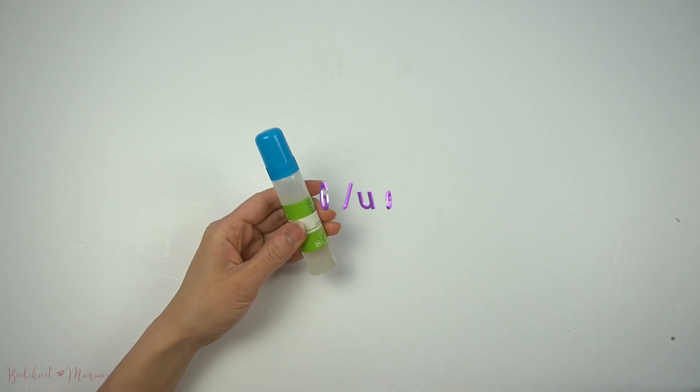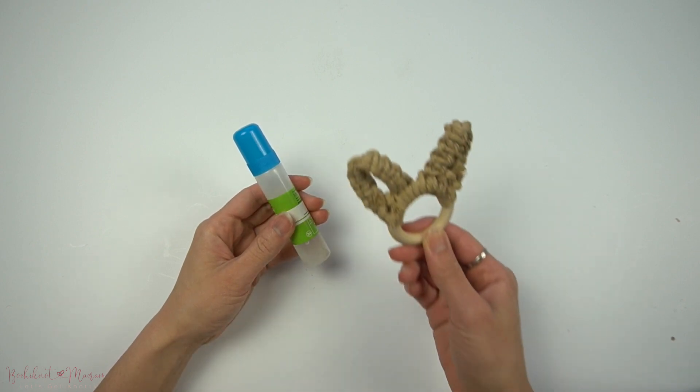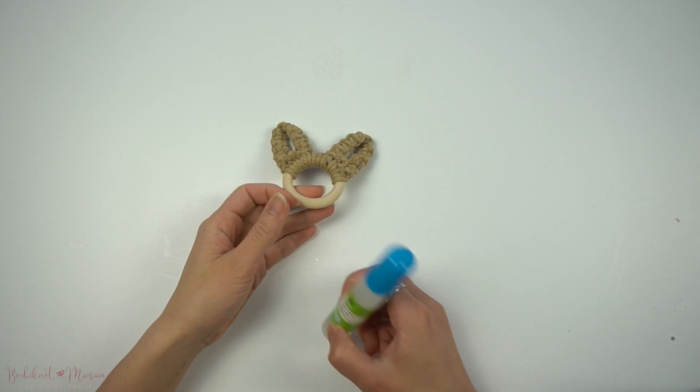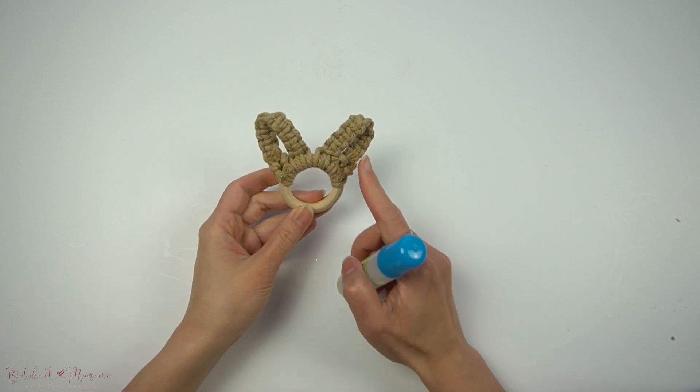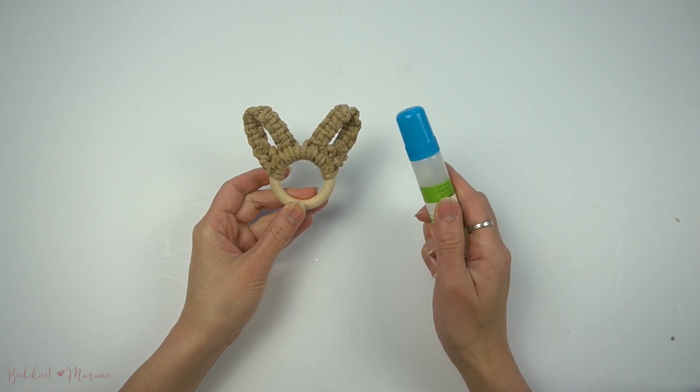Sometimes we do make knots in macramé that might easily unravel or loosen up, and to make sure and prevent that from happening as much, you can dab a bit of glue on the cord ends so that it doesn't unravel.